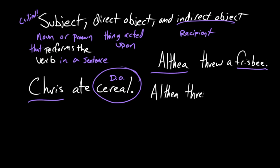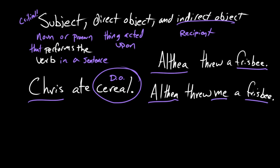But what if we have the sentence "Althea threw me a frisbee"? Well, we know from context — because we have the word "frisbee" in here — that Althea is not hurling me bodily, right? She's not chucking me across a field for a dog to catch. We know the subject is Althea, the direct object is "frisbee." But where is that frisbee going? It's going to me. So "me" is the indirect object — the pronoun "me" is the recipient of the direct object, the frisbee.